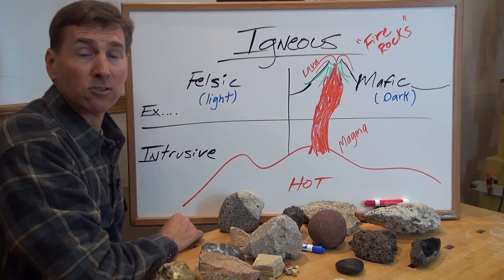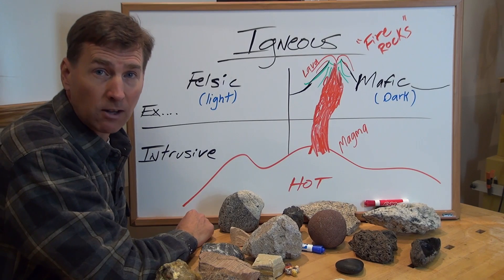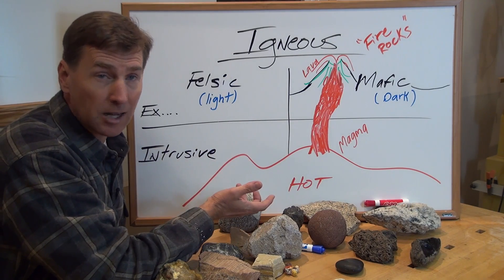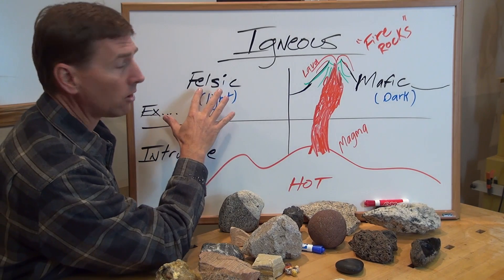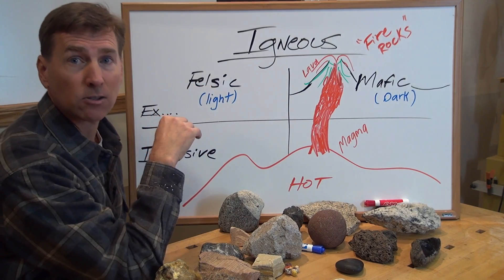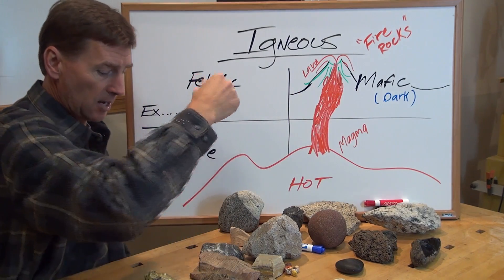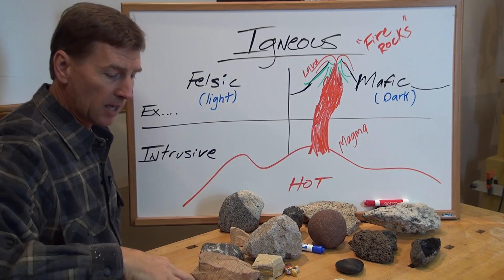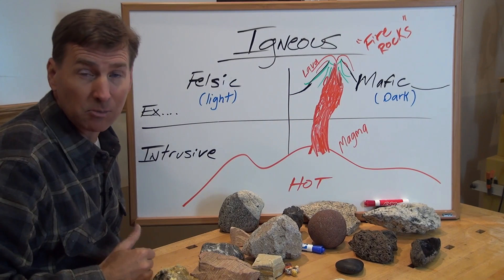There's another way to characterize the lava rocks, and that's by their color or chemical makeup. You could have the light-colored rocks called felsic, and the dark-colored rocks are called mafic — they have iron and other dark-colored elements in them.